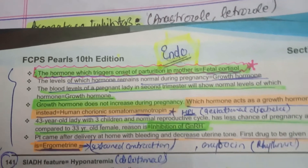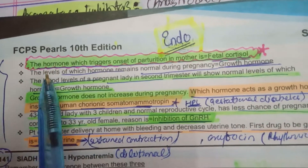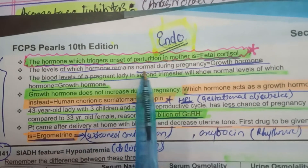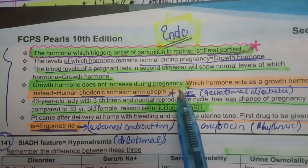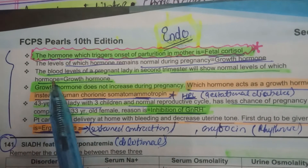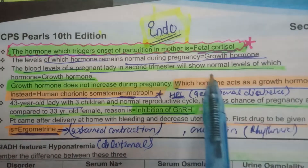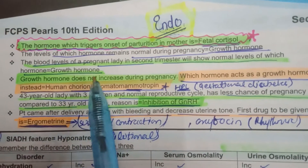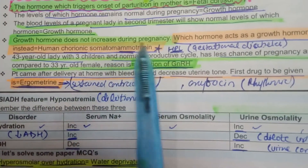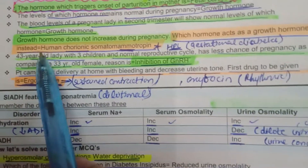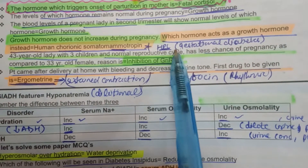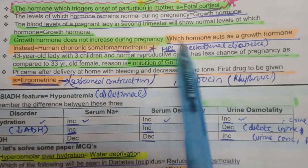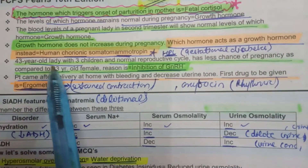The level of growth hormone remains normal during pregnancy. It is human placental lactogen (human chorionic somatomammotropin) that plays the role of growth hormone during pregnancy. In a pregnant lady's blood in the second trimester, growth hormone levels are normal. Human placental lactogen is also the hormone that may cause gestational diabetes.